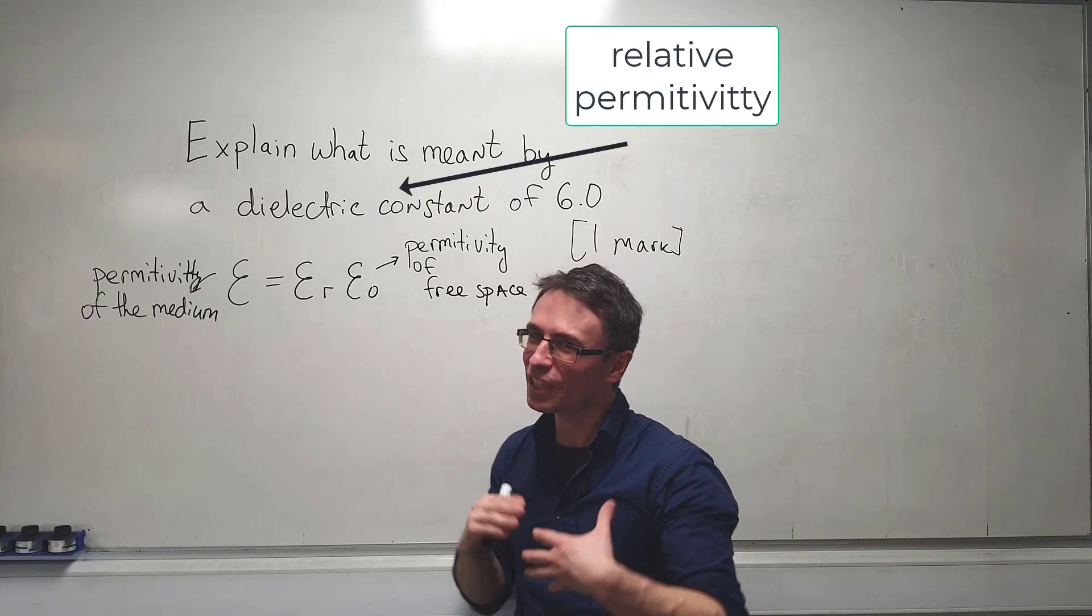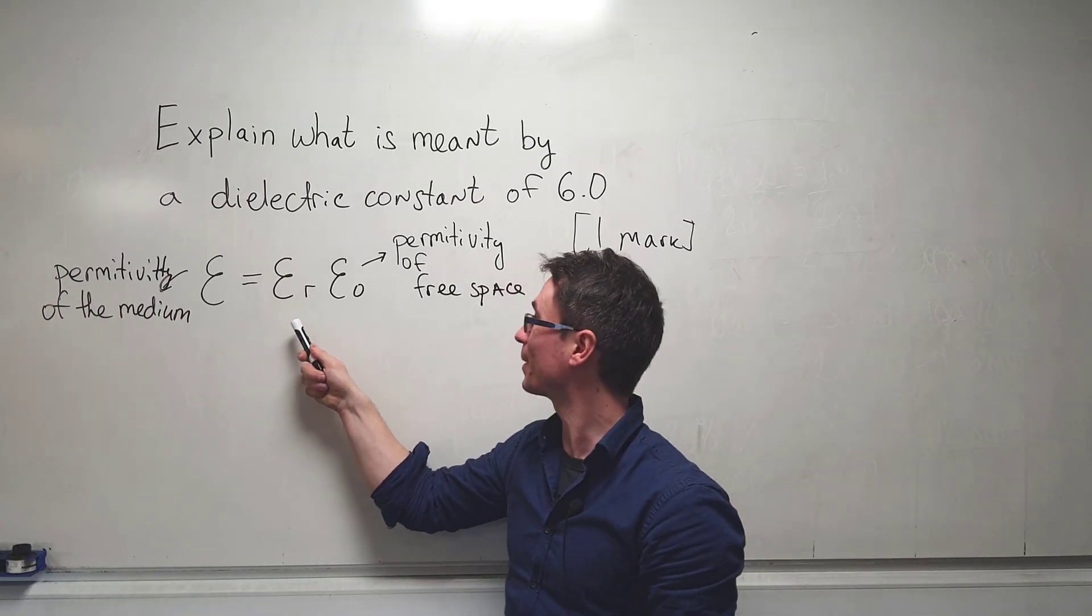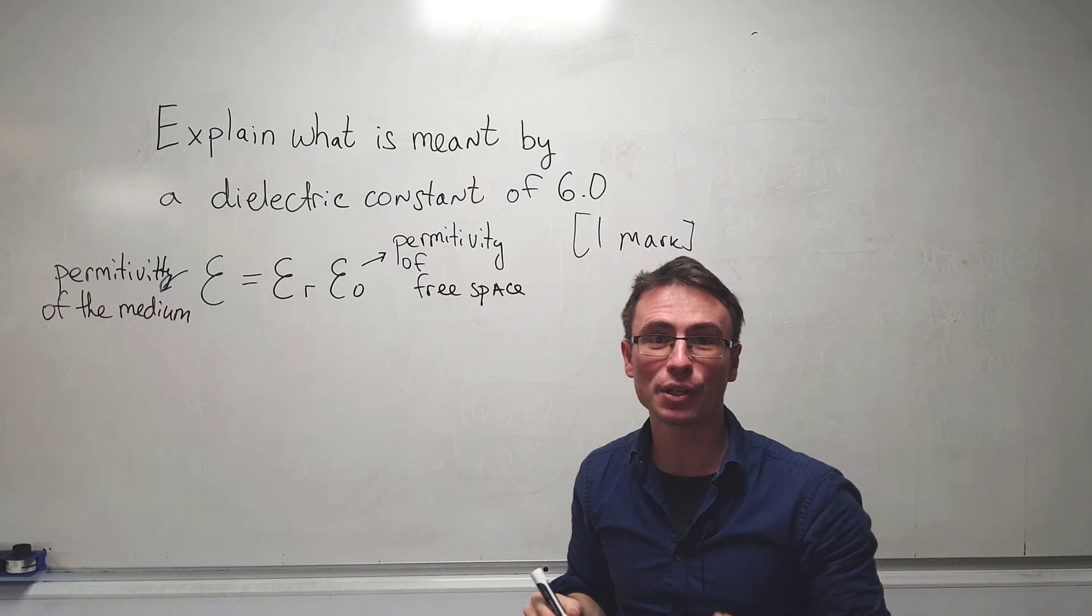This is just another word for the relative permittivity of a medium, which is defined as the product of the relative permittivity and the permittivity of free space.